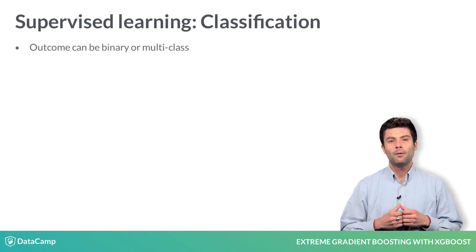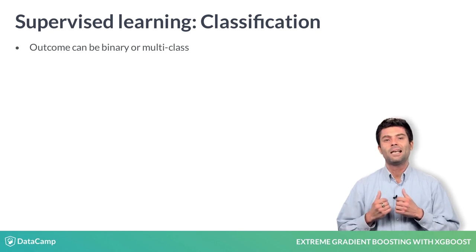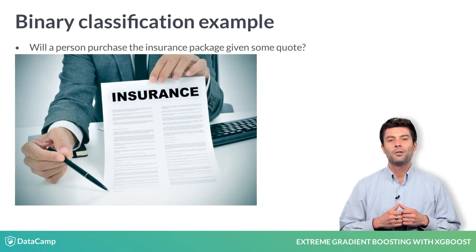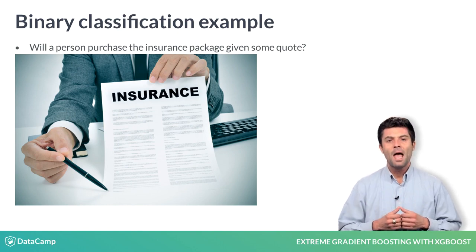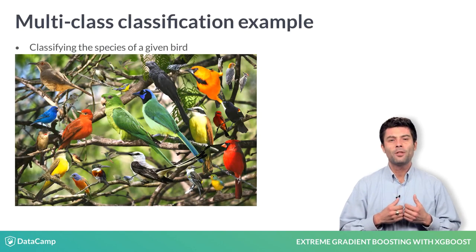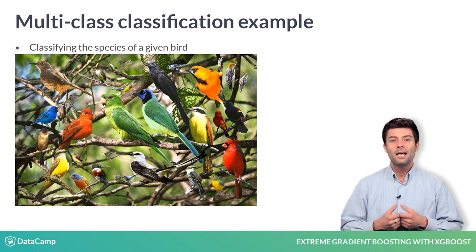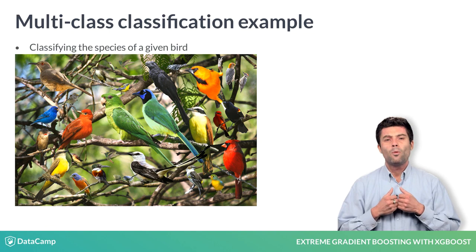Classification problems involve predicting either binary or multi-class outcomes. For example, predicting whether a person will purchase an insurance package given some quote is a binary supervised learning problem, and predicting whether a picture contains one of several species of birds is a multi-class supervised learning problem.